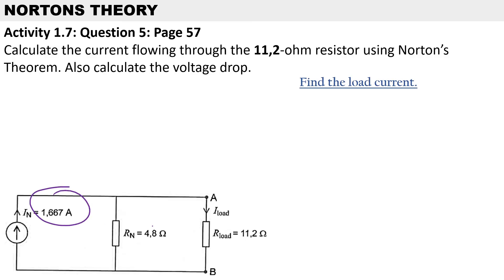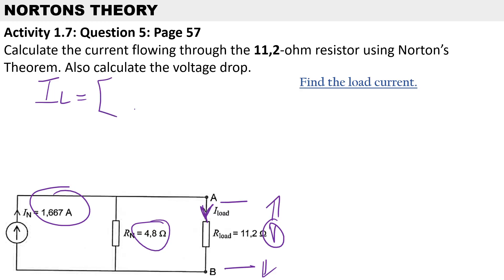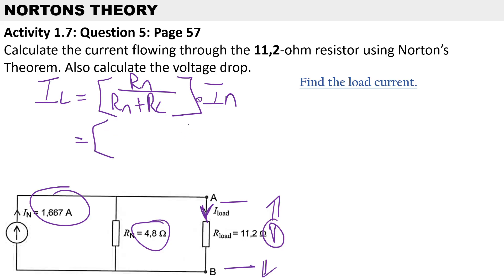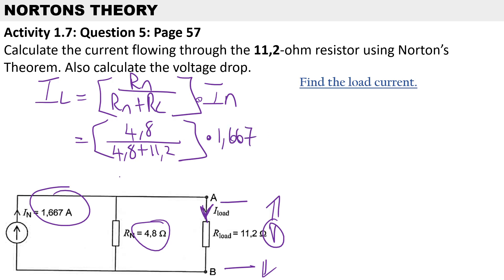Now we have Norton's current and Norton's resistance, so we can calculate the load current and the voltage drop across the load. Using the current divider rule: I_L equals R_N over R_N plus R_L, times Norton's current. Substituting: 4.8 over 4.8 plus 11.2, multiplied by Norton's current of 1.667 amps. The load current works out to 0.5 amps.